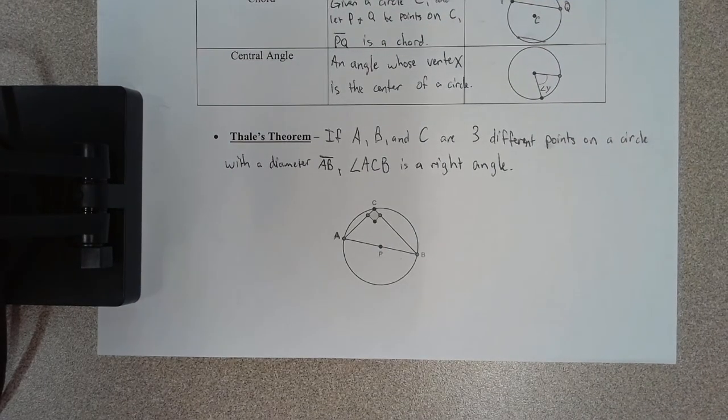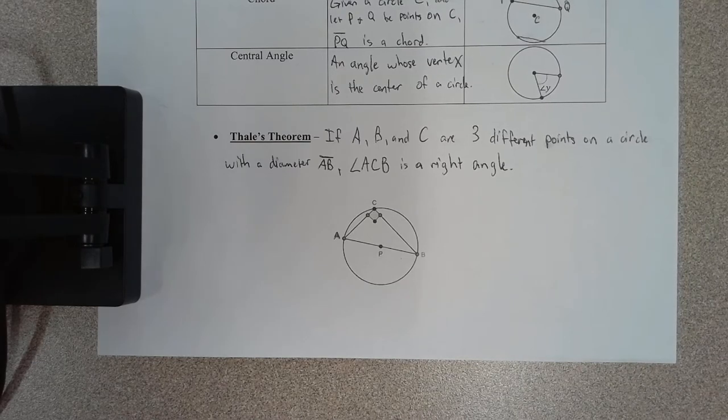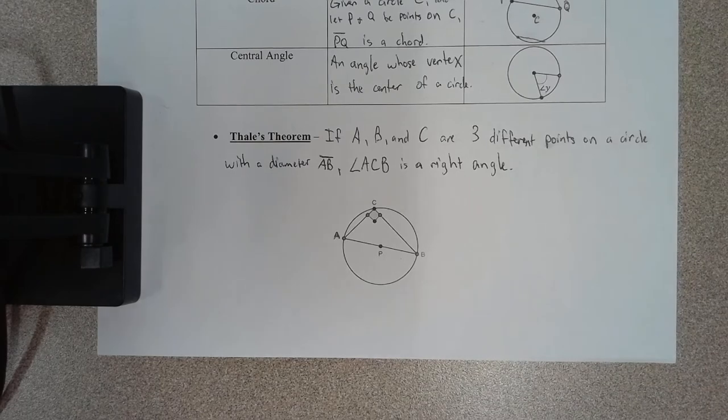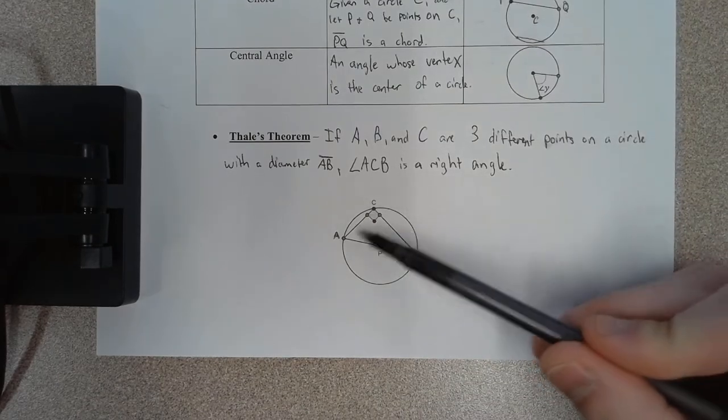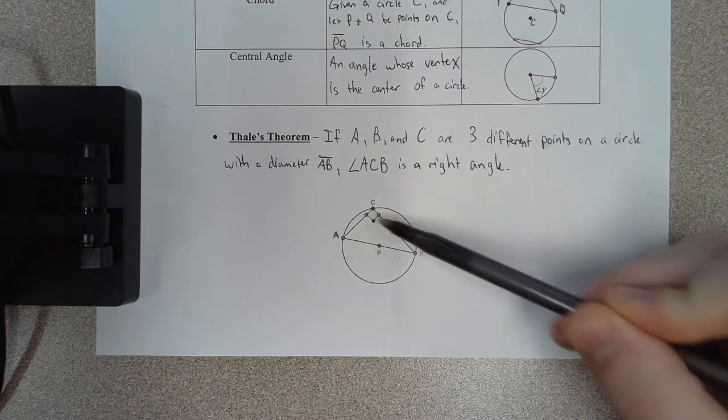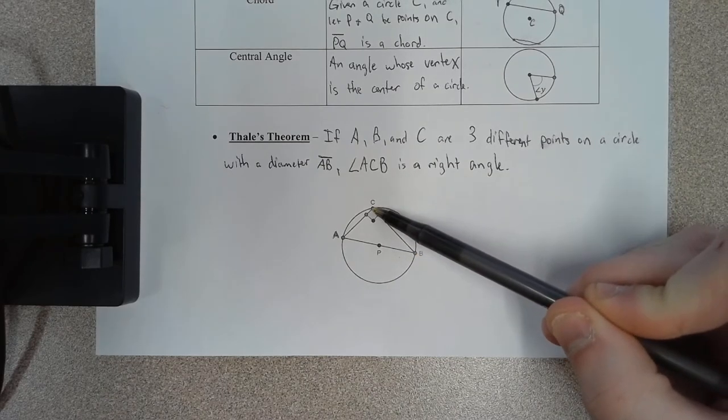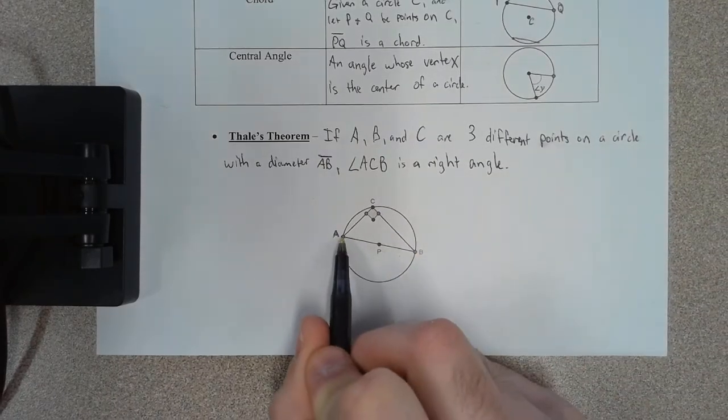Okay, the last part of the front page of the notes are about Thales' theorem, and that says that if you have a circle and if you have points A, B, and C on that circle, and your diameter is from A to B,